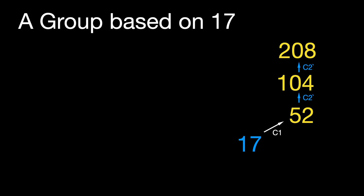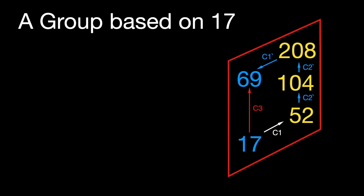Here I notice that 208 is 3 times 69 plus 1, so I'll use the inverse of rule C1 to get the value 69. This forms the complete group based on the number 17.